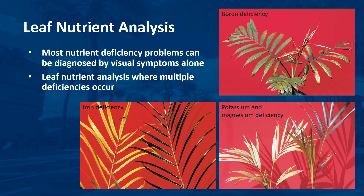Most nutrient deficiency problems can be readily diagnosed by visual symptoms alone. For most palm species, diagnosis should rely on visual symptoms rather than a leaf nutrient analysis. Baseline data for nutrient sufficiency has been developed for only a few palm species. Therefore, without a comparison to a known nutrient-sufficient palm of the same species, a leaf nutrient analysis can be misleading.